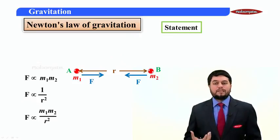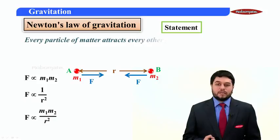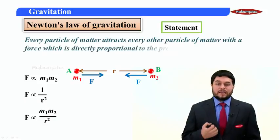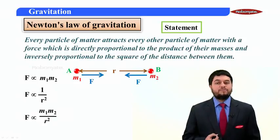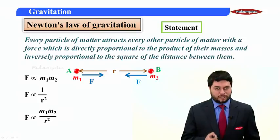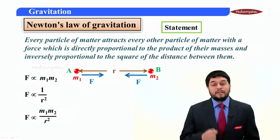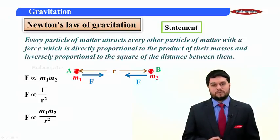Now, looking at this proportionality, it's very easy to define the law. The law goes something like this: Every particle of matter attracts every other particle of matter with a force which is directly proportional to the product of the mass and inversely proportional to the square of the distance between them.